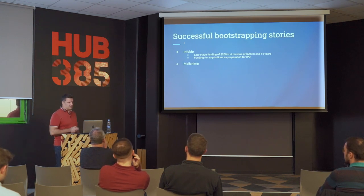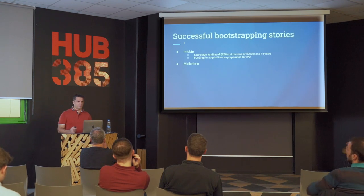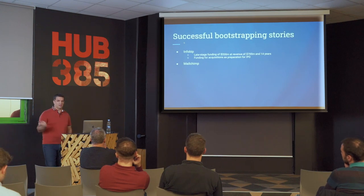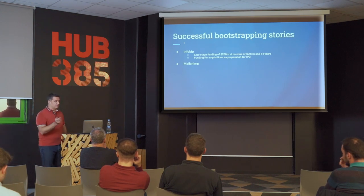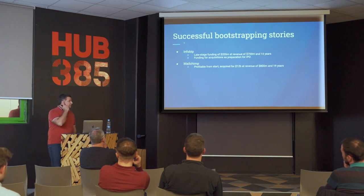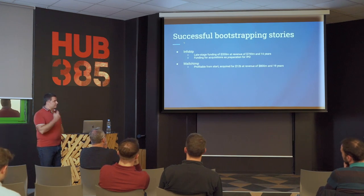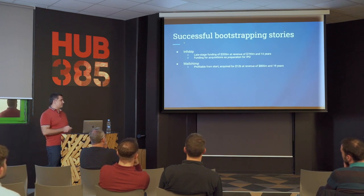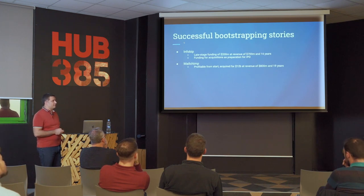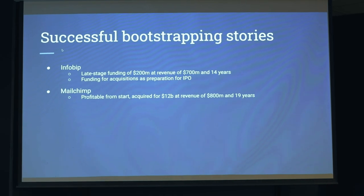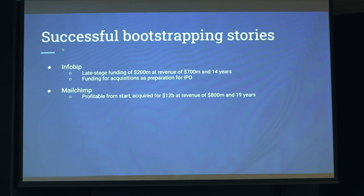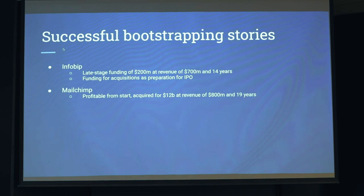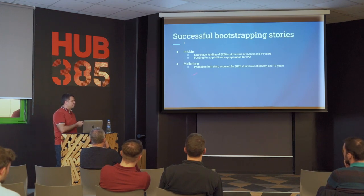Then there's Mailchimp — a platform for sending email marketing campaigns. Mailchimp was profitable from the start and was acquired for $12 billion at the time when their revenue was $800 million per year, and they were a 19-year-old company. They never took any outside funding. They grew from day one because they were profitable from the start — their business model provided enough money every day that money was not the limitation for growth.